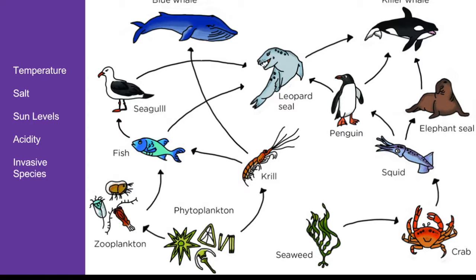Food webs are typically very stable. If one organism gets removed, then the other organisms might be impacted, but they'll usually adjust and continue to be able to live. Even if you have some small changes in temperature, or the amount of salt in salt water, or the amount of sunlight or acidity, all of those things might cause a food web to change a little bit. But usually these ecosystems are very stable. Small changes don't have that big of an effect, and the ecosystem will return to its original state.